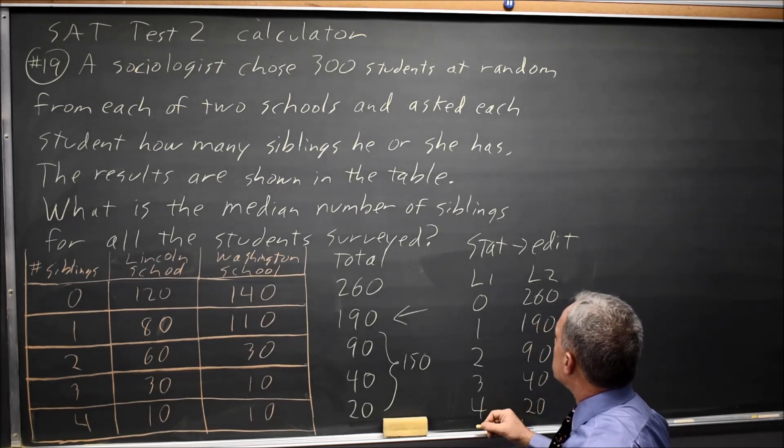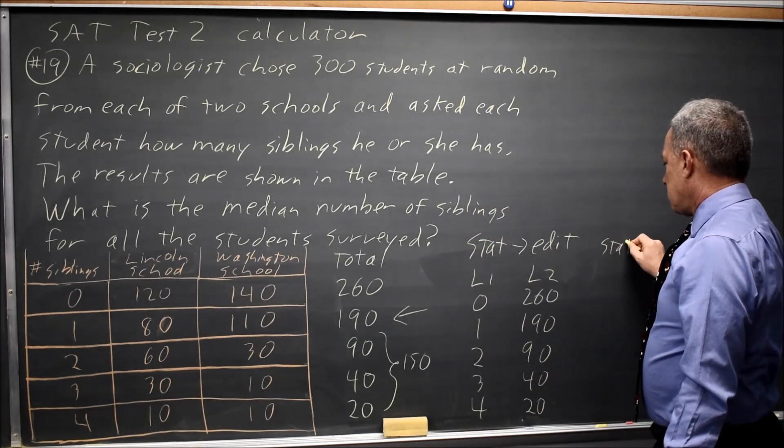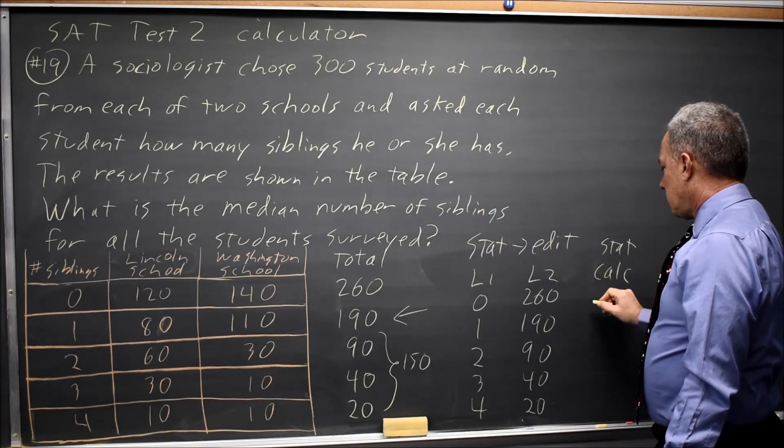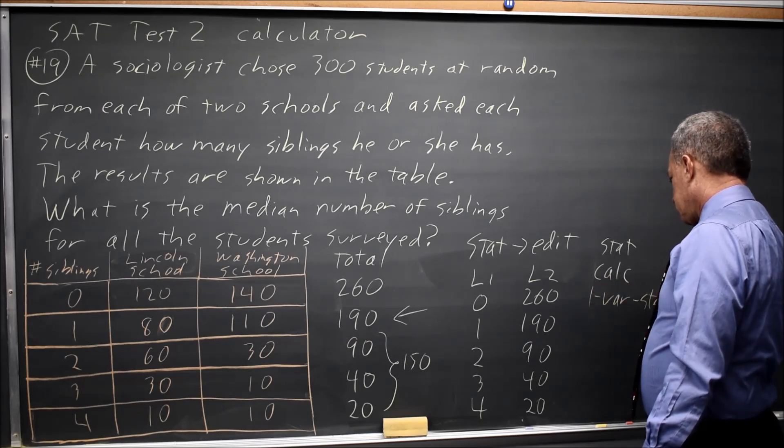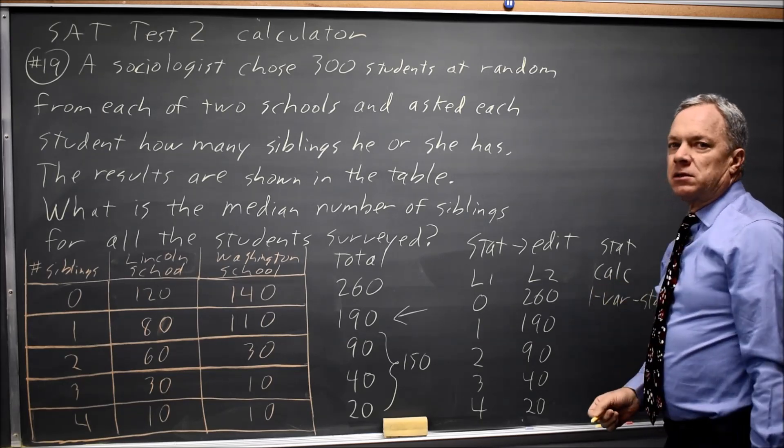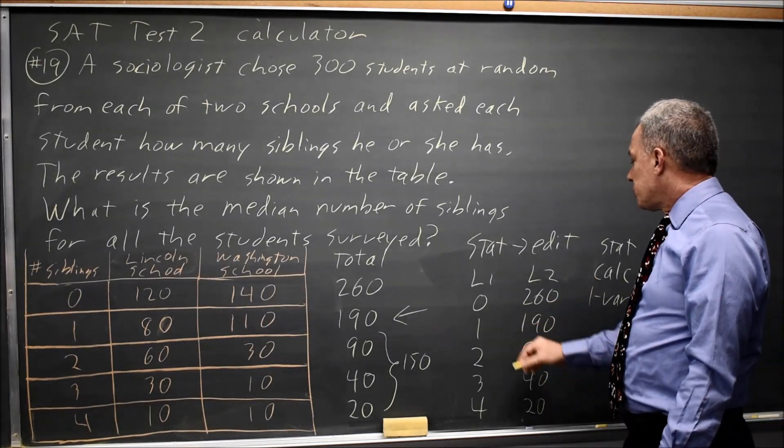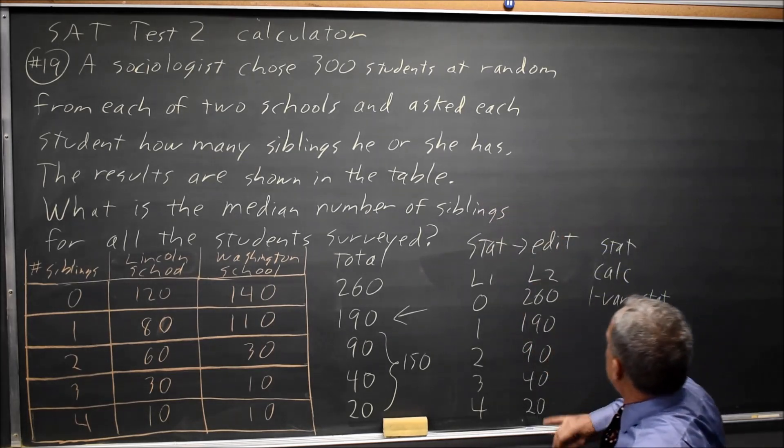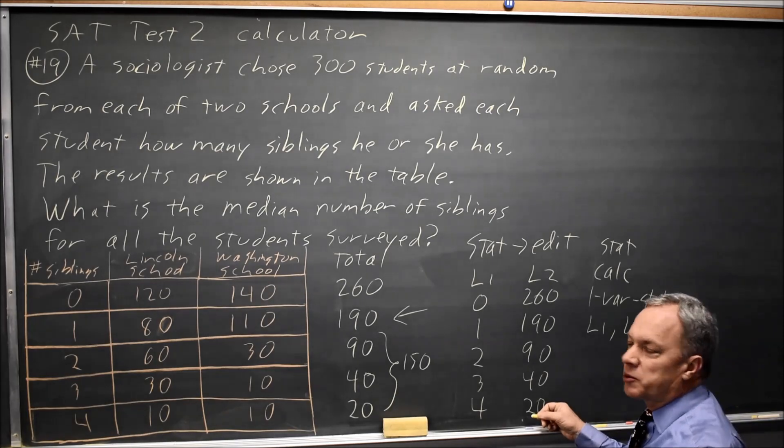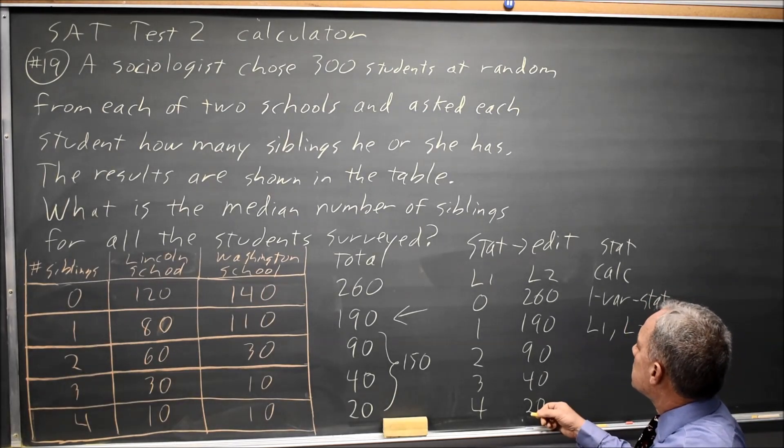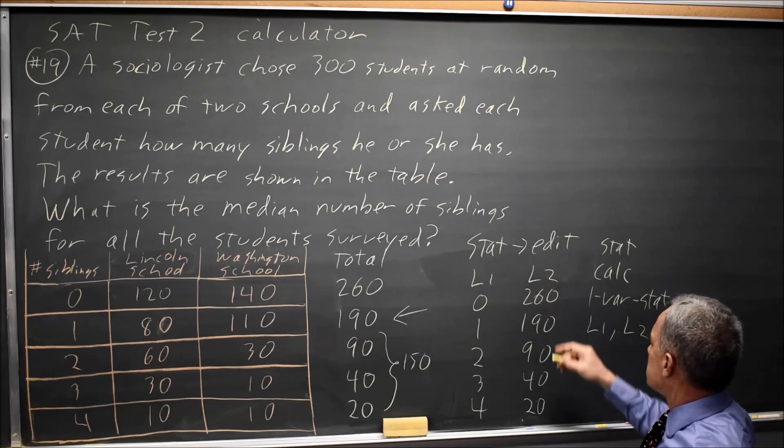And then if you use stat, calculate, 1 variable statistics, your graphing calculator will give you the median number from this list if you put either L1, L2 for the older operating systems or values list 1, frequency list, list 2.